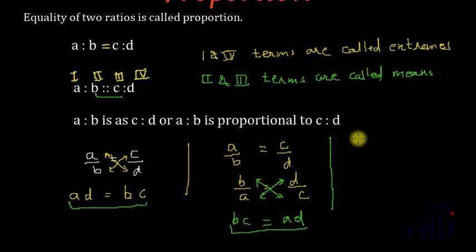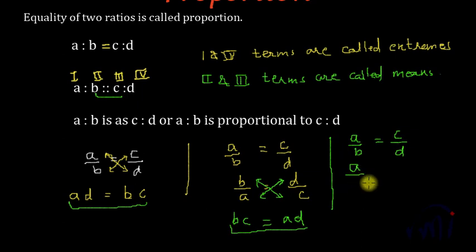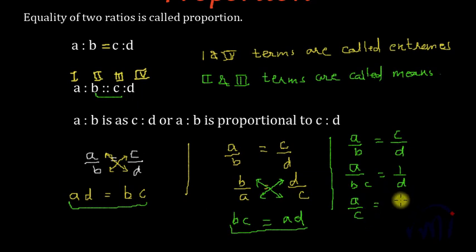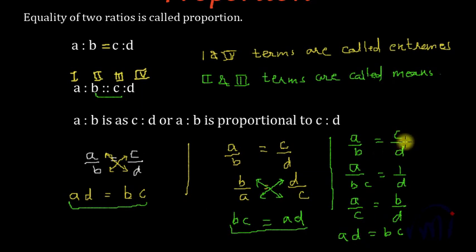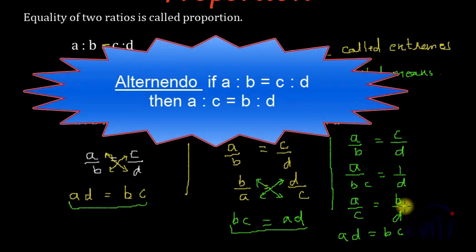We have A is to B is equal to C is to D. If we bring C to the left side of the equal sign, we get A by BC is equal to 1 by D. Taking B to the right side gives us A by C is equal to B by D. Cross multiplying gives AD is equal to BC. That means if A is to B is equal to C is to D, then A is to C is equal to B is to D. This relation is called alternando.